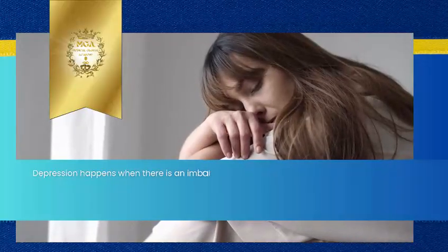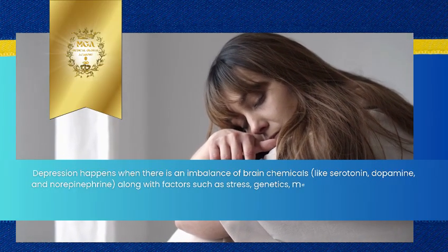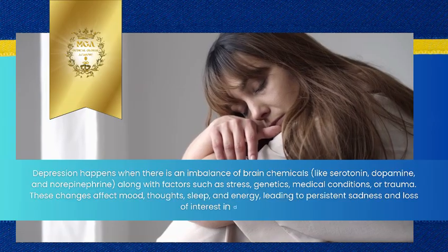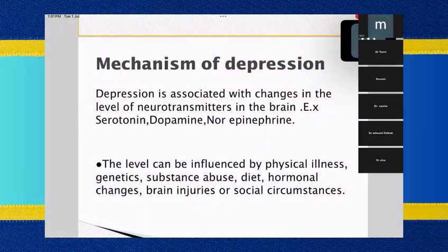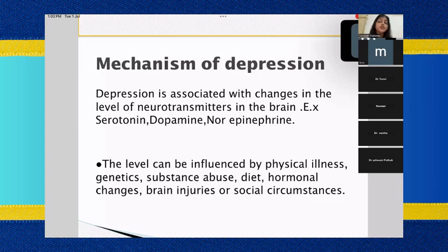Depression happens when there is an imbalance of brain chemicals like serotonin, dopamine, and norepinephrine, along with factors such as stress, genetics, medical conditions, or trauma. These changes affect mood, thoughts, sleep, and energy, leading to persistent sadness and loss of interest in daily life. In psychiatry we use the term 'disorders' because there is no single particular cause — they are multifactorial, with gene-environment interactions playing a role. The ultimate product is an imbalance of certain neurotransmitters, particularly the biological amines known as noradrenaline, dopamine, and serotonin. So we need drugs that will work on this imbalance to help patients with depressive disorders.